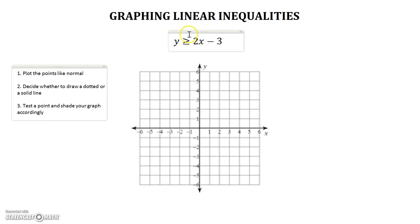Now you're given the inequality y is greater than or equal to 2x minus 3. I'm going to do exactly what my steps said. Number one, plot the points like normal. Our y-intercept is negative 3, and our slope is 2. So I'm going up 2 over 1, up 2 over 1, up 2 over 1, through the whole graph.